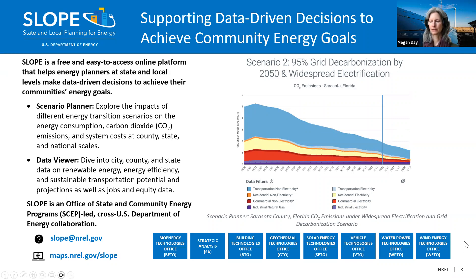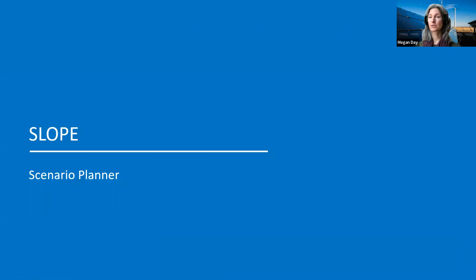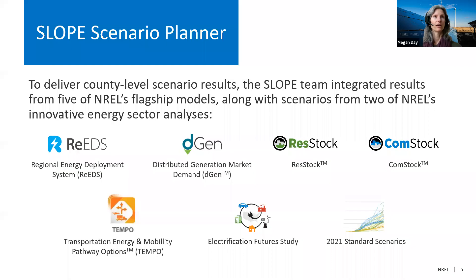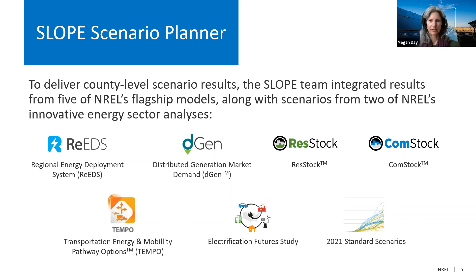We are going to take a quick look at the two major components of SLOPE and then get into the live demo. The scenario planner delivers county-level data, which is pretty unprecedented, looking at different scenarios through 2050. We're looking at the big picture, the context, and the potential of different types of scenarios into the future. The scenario planner is built on the foundation of seven different flagship models, some developed over 20 years or more.